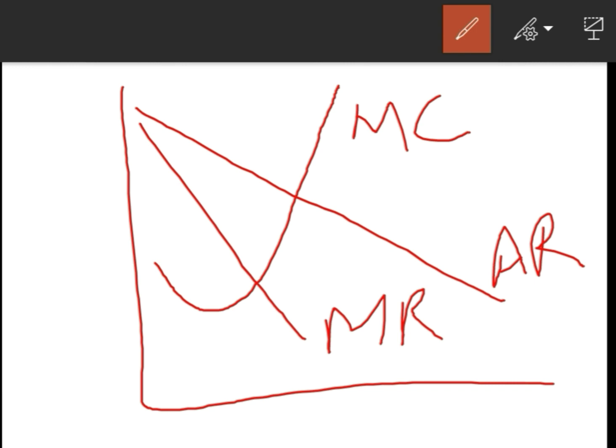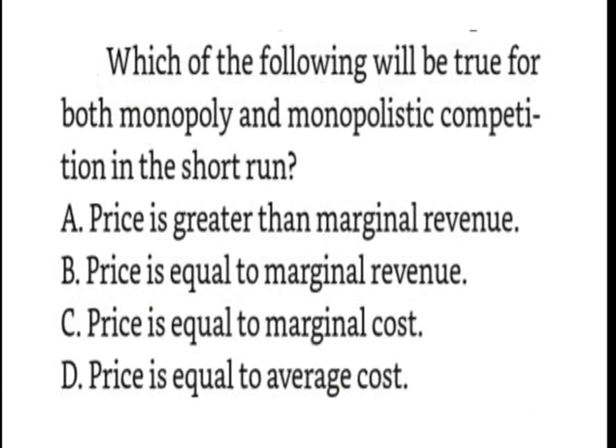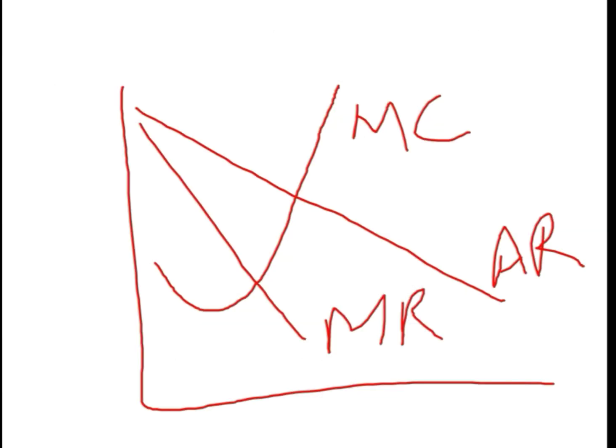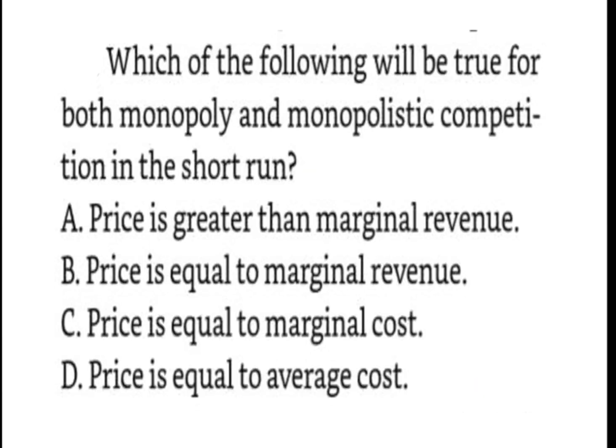We come back to our question. The answer is price is greater than marginal revenue. See, price is equal to average revenue, so average revenue is greater than marginal revenue. So our answer is A.